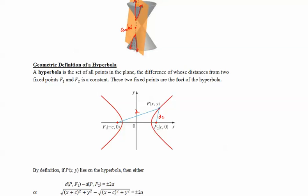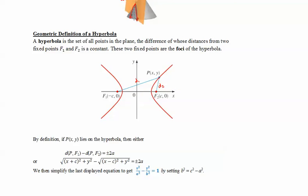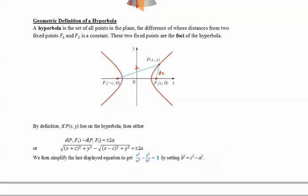So here is how we derive the equation of the ellipse. By definition, if P lies on a hyperbola, then either the distance from P to F1 minus P to F2 equals plus or minus 2a.